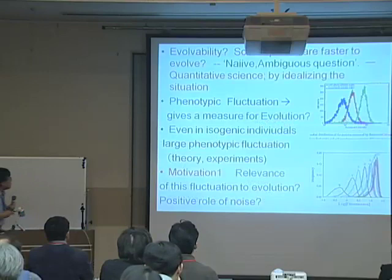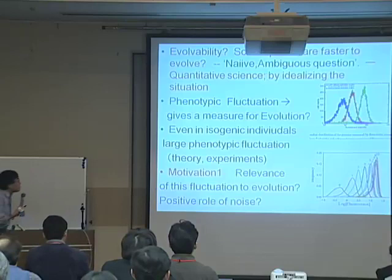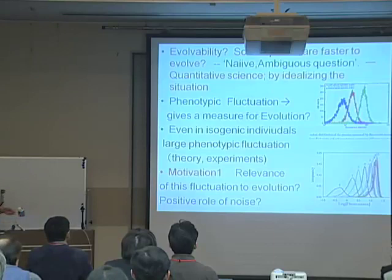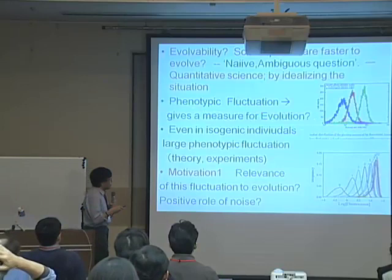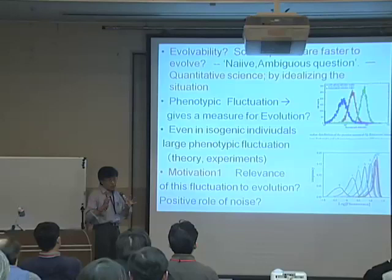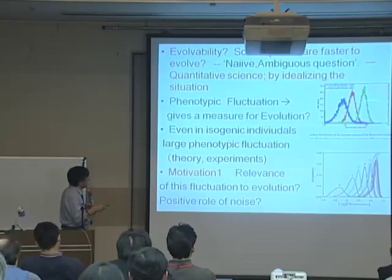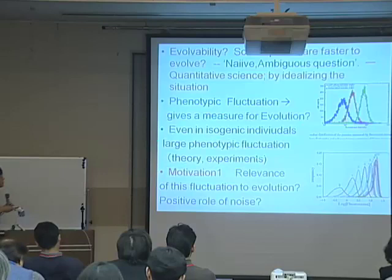We have some feeling that some species are faster to evolve. It's a kind of naive, ambiguous question, and I like to do this type of question to make a more quantitative science by idealizing the issue. These days, there are lots of measurements of cell-to-cell fluctuation. For example, this is protein concentration measured by fluorescence. For isogenic bacteria — same gene bacteria — even if they have the same gene, there is quite a large change in protein concentration. The question is: does this kind of fluctuation relate to evolution?